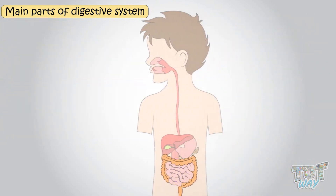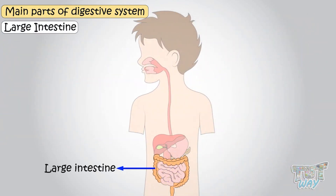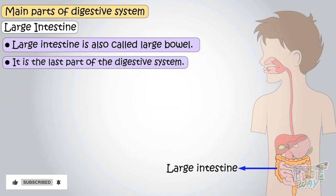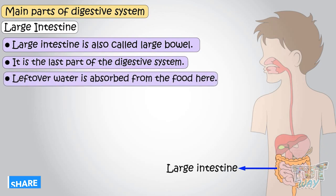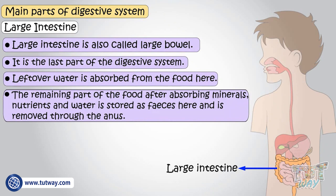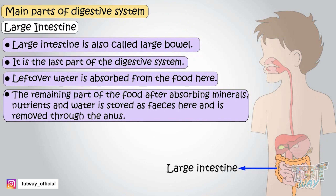Large intestine — also called the large bowel, it is the last part of the digestive system. The leftover water is absorbed from the food here. The remaining part of the food, after absorbing all minerals, nutrients, and water, is stored as feces and removed through the anus.